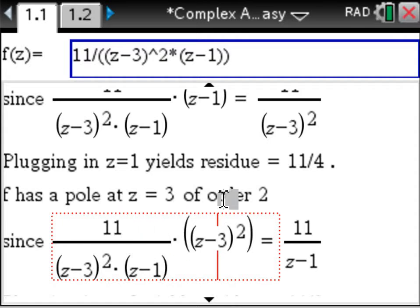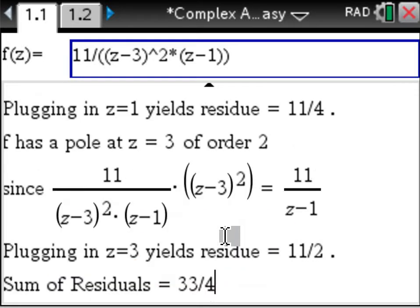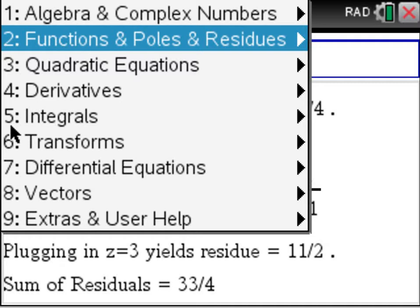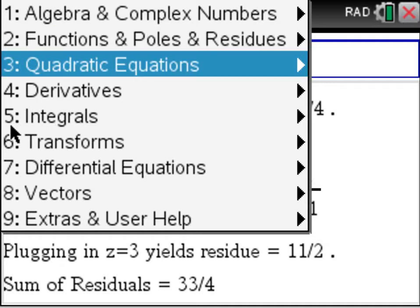And then we have a pole of order 3 at z equals 3. And that residue turns out to be 11 over 2. And the sum of the residues is 33 over 4. Now that is a very handy part of the app. Finding poles and residues shows up all the time.